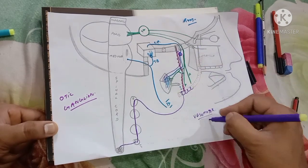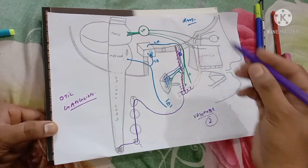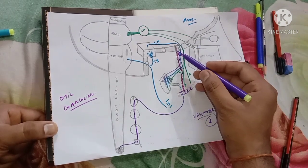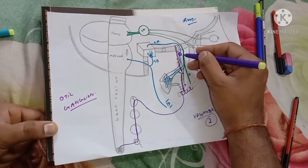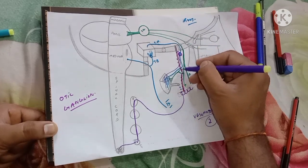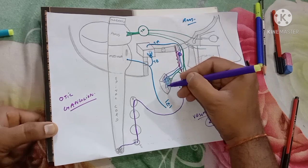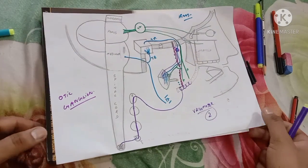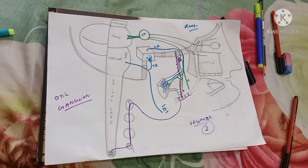This forms the second root of the otic ganglion. The third root is formed by the auriculotemporal nerve itself, which carries sensory information from the parotid gland. This was all about the otic ganglion.